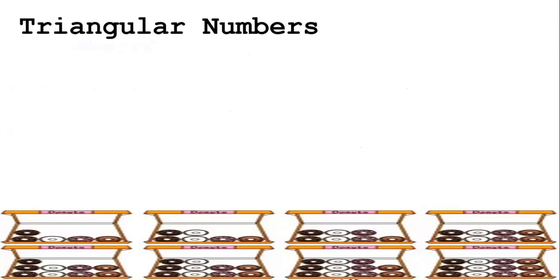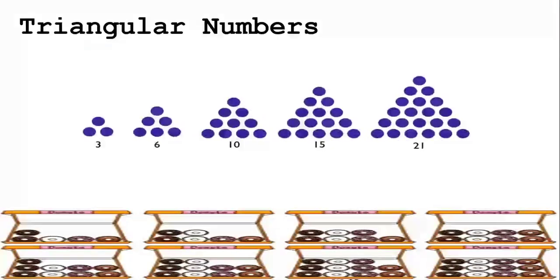Let's have triangular numbers as an example. The terms in this sequence are 3, 6, 10, 15, and 21. These numbers represent the dots that are being used to formulate the triangle in this sequence.